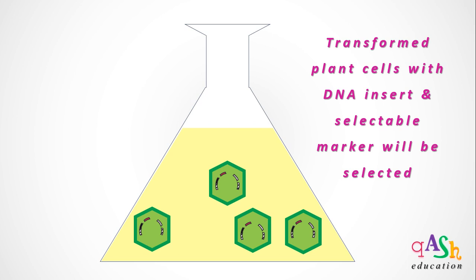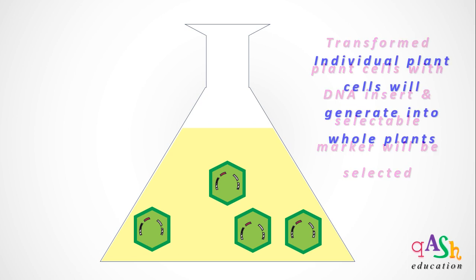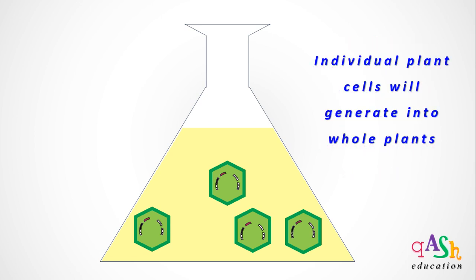This is how transformation is accomplished in plants using the co-integrate vector system. Each of these transformed plant cells can now give rise to whole plants that will be transformed and carry the characteristics of your gene of interest.